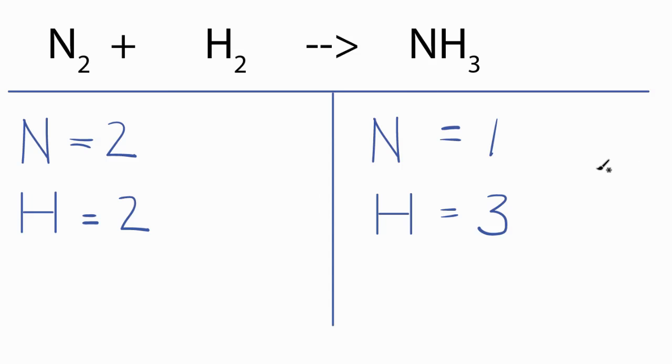Usually when we have an odd number of atoms, it's best to multiply that by two and get an even number. Let's see how that works.